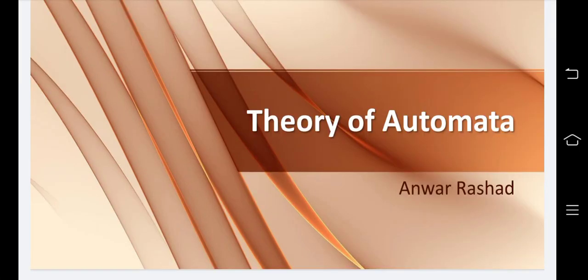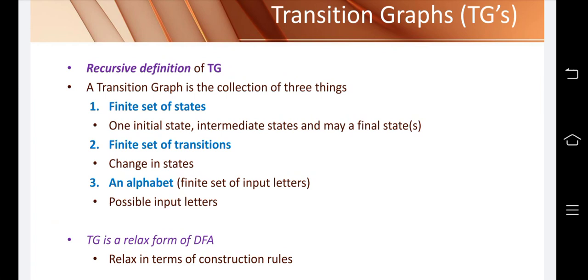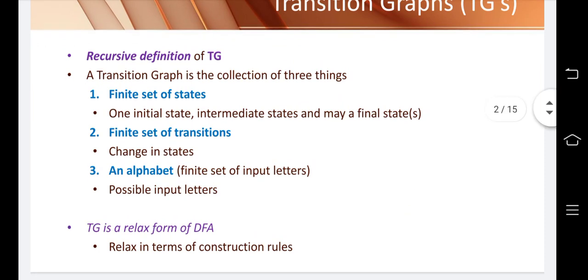Today we are going to discuss transaction graph and generalized transaction graph. A transaction graph is a collection of three things: a finite set of states, which includes one initial state, possibly one or many final states, and intermediate states. The second requirement is a finite set of transactions — a transaction is the change of state from one state to another through an input symbol. The third requirement is a finite set of alphabets.